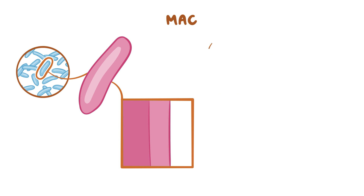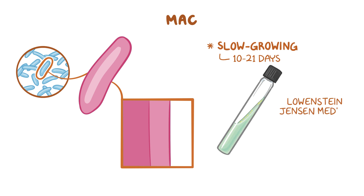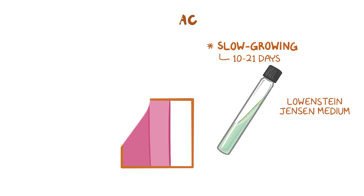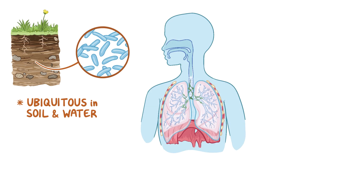MAC are slow-growing bacteria, and it typically takes them 10 to 21 days to grow on a medium called Lowenstein-Jensen. MAC are ubiquitous in soil and water, and they're thought to enter the body through inhalation.